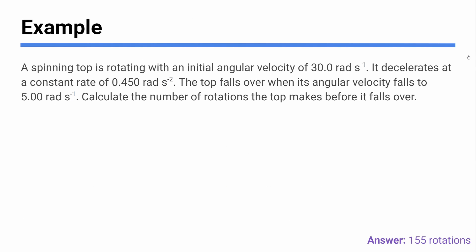Let's do a practice problem with these equations. We have a spinning top with an initial angular velocity of 30 radians per second. It decelerates and eventually falls over when its angular velocity decreases to 5 radians per second. We want to calculate the number of rotations the top makes before it falls over. This is a rotational SUVAT problem, so I'll set up a table with the five rotational quantities: omega_i, omega_f, alpha, delta theta, and t.